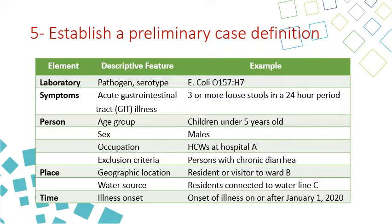Step five is to establish a preliminary case definition. As shown, there are elements and descriptive features with examples covering laboratory findings, symptoms, person, place, and time. You can review these and then develop a case definition appropriate for the current outbreak situation.